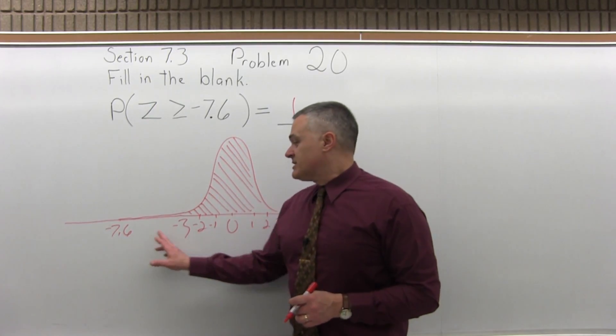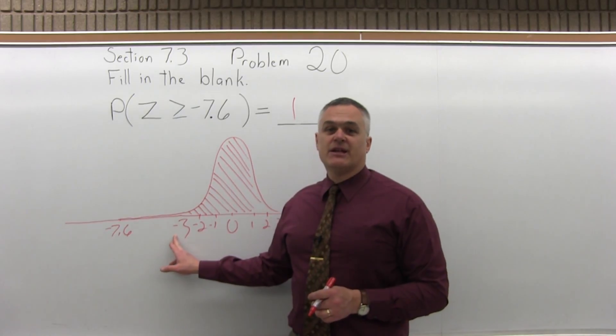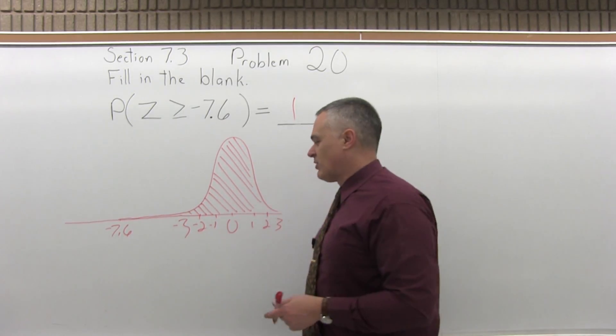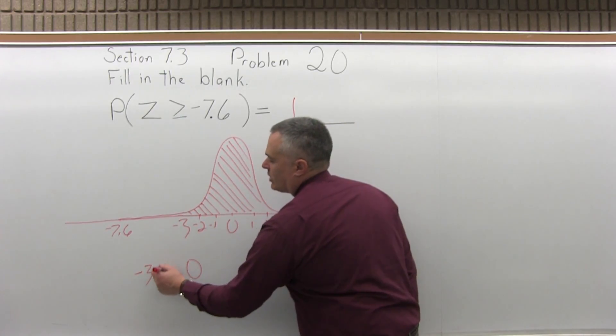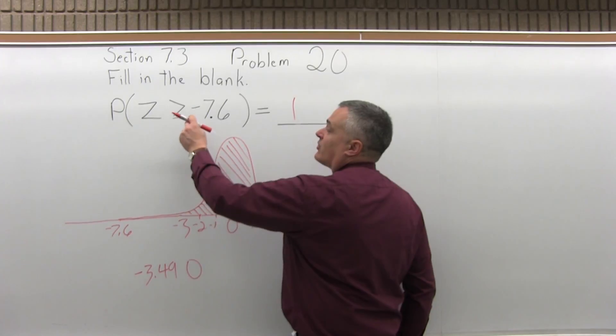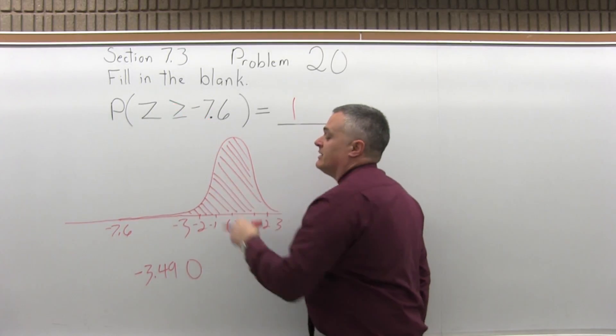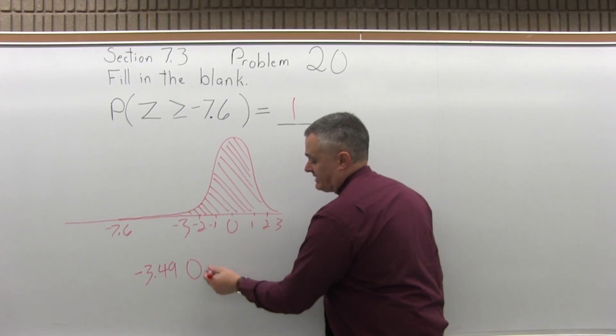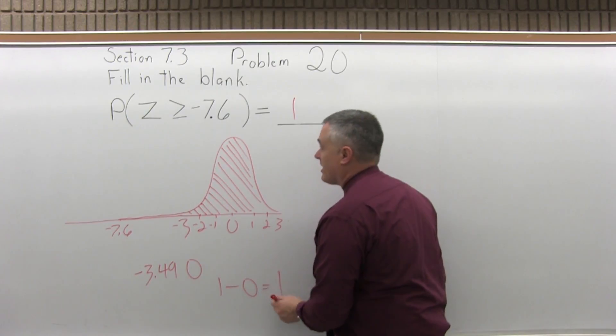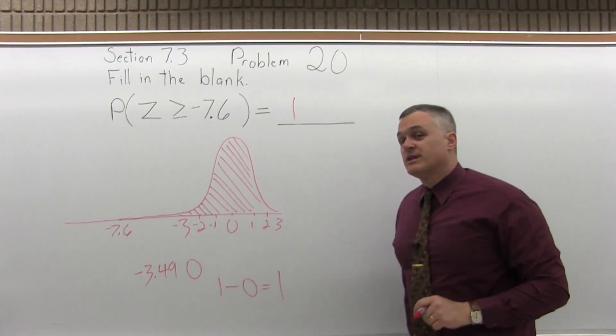Now if you remember from the notes, it said anything less than negative 3.49, assume the answer is 0, it's 0 with insensible round off. Now, since this is a greater than question, the answer is always 1 minus the chart value. So 1 minus the chart value of 0, sure enough, is 1, which I knew was going to be when I started.